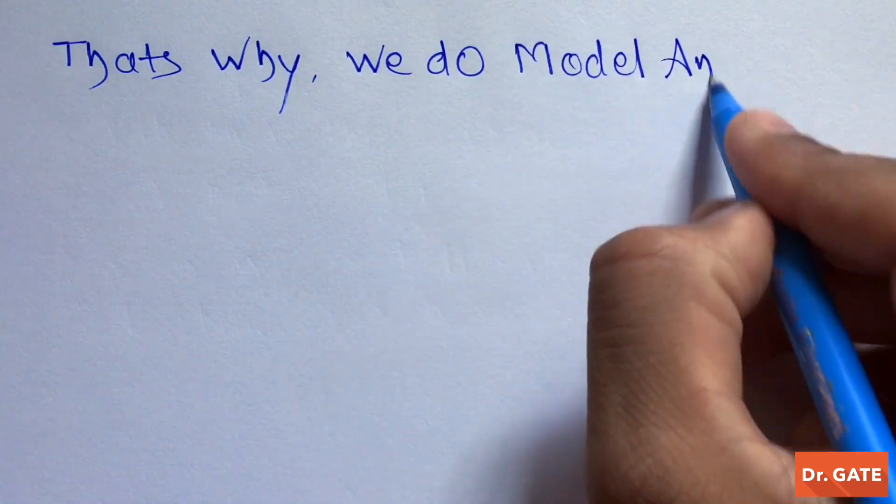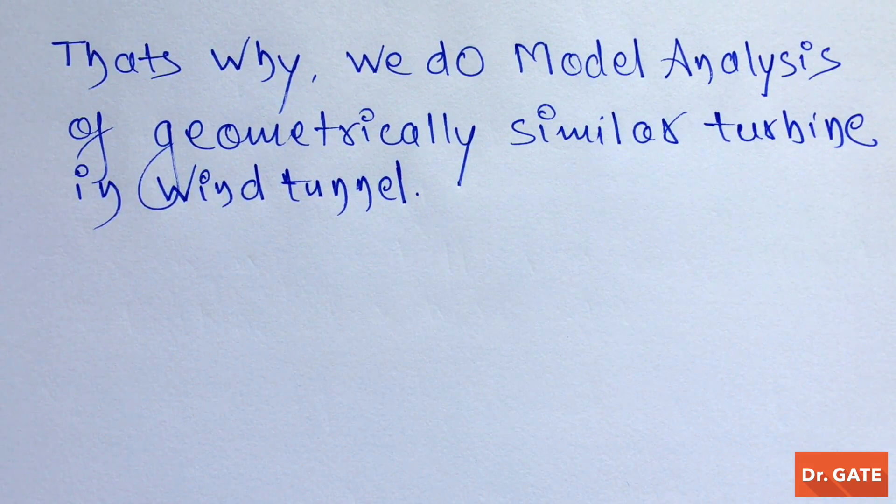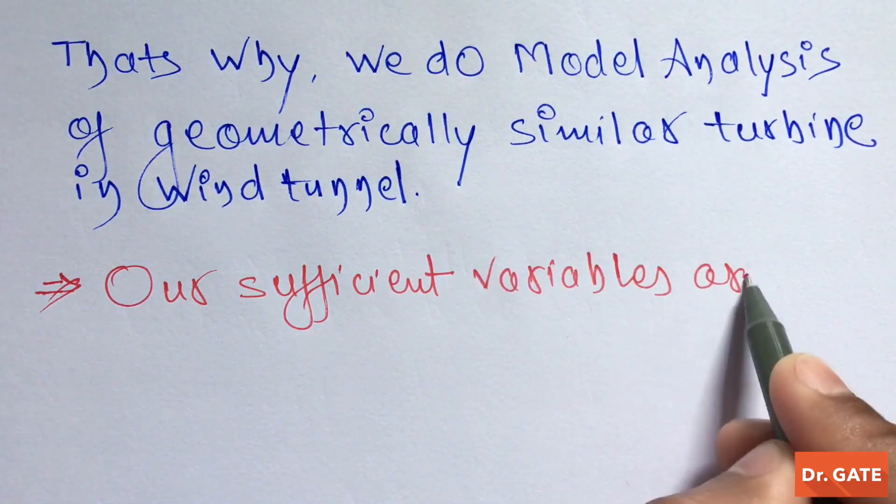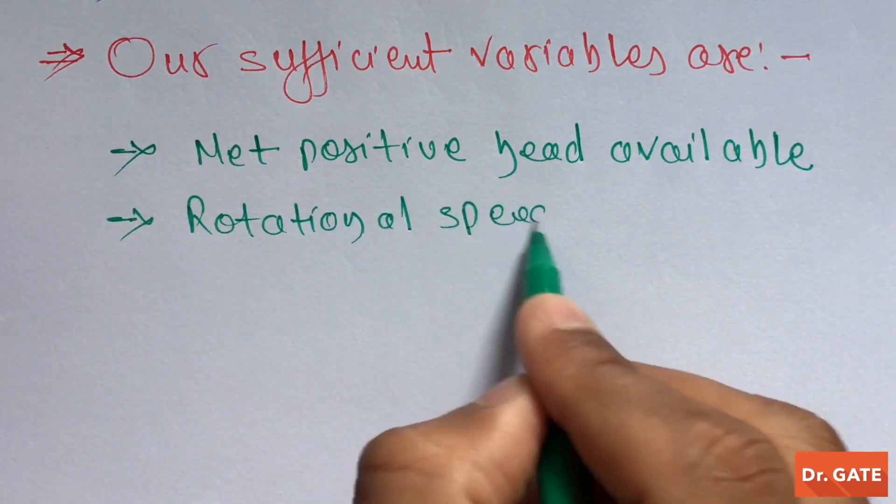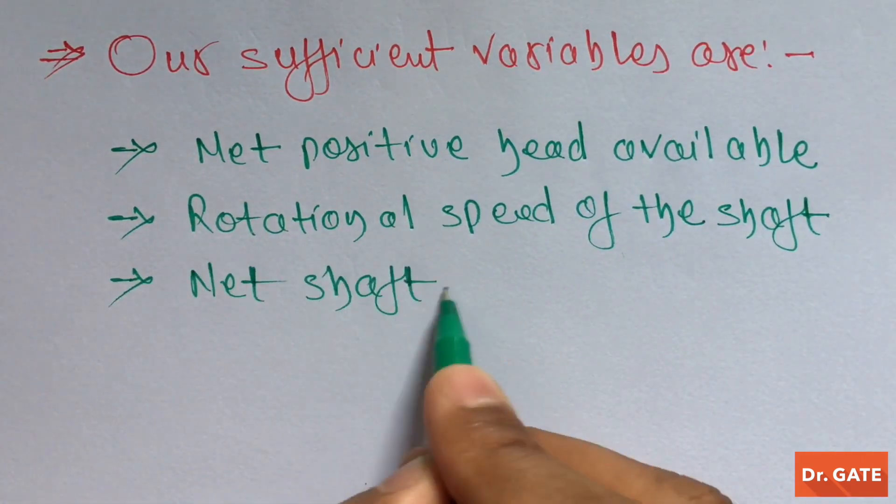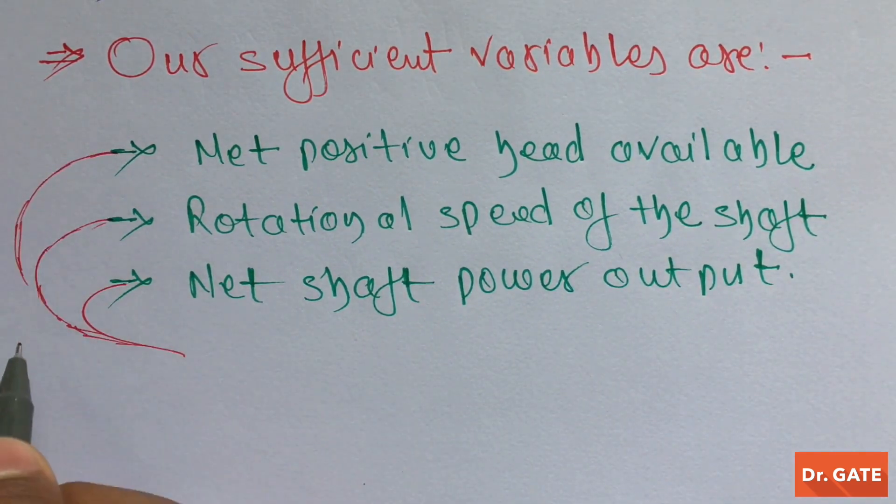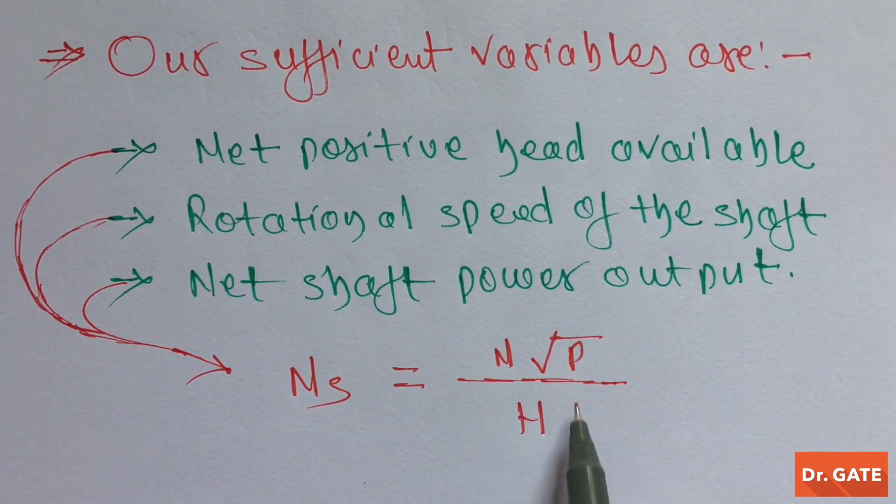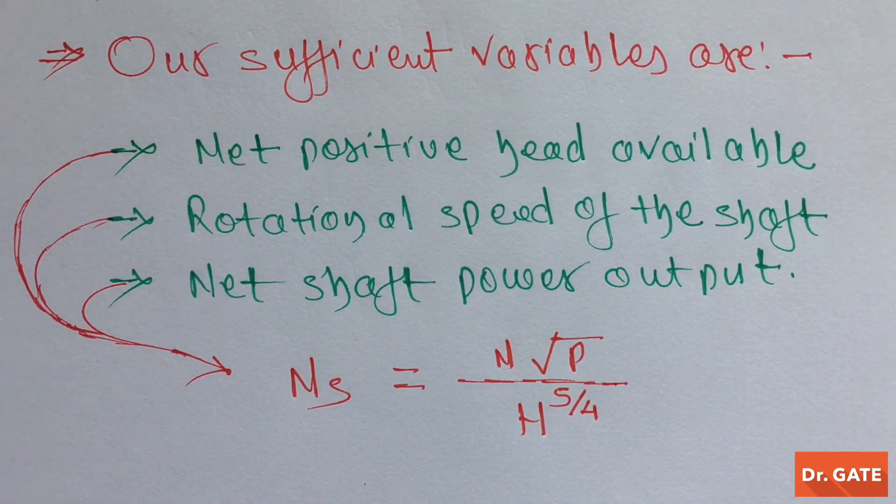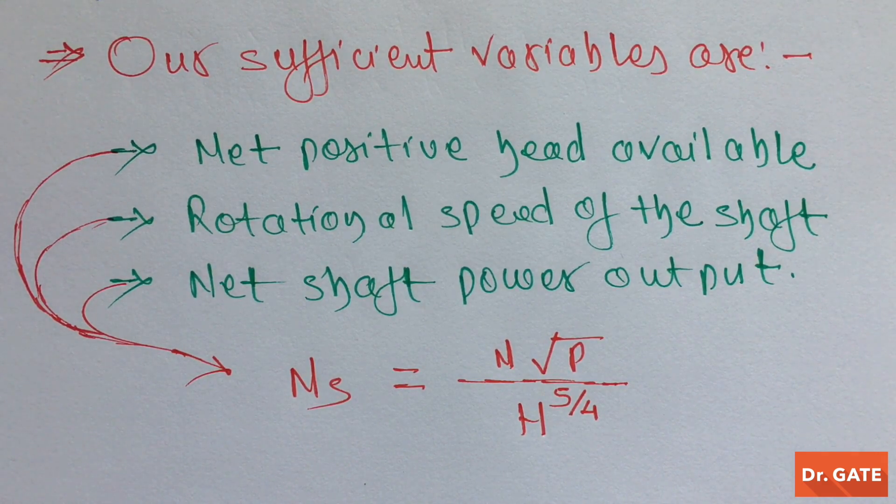That's why we do model analysis of geometrically similar turbine in wind tunnel. So, if we want to find our answers by using model analysis, our sufficient variables would be: Net positive head available, Rotational speed of the shaft, Net shaft power output. If we combine these three terms into a single term, we will get specific speed. So, after doing model analysis of different types of water turbines at different conditions, it is found that: